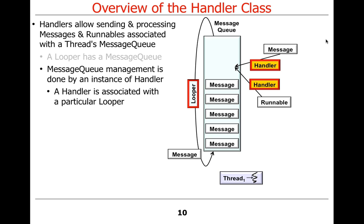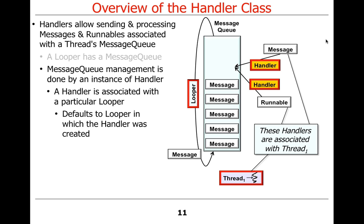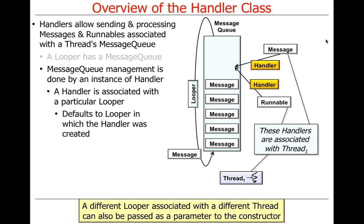A handler is associated with a particular looper. By default, it's the looper in which the handler was created, which is usually the main thread — the user interface thread. You can spawn other threads and create handlers there, associated with those threads. The mechanism that associates handlers with the thread they're created in is Java's thread-local storage — the thread-specific storage pattern.